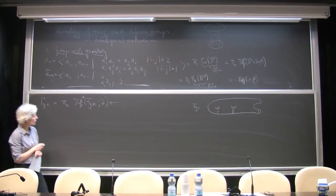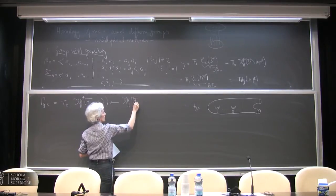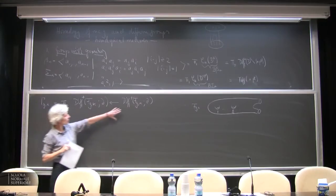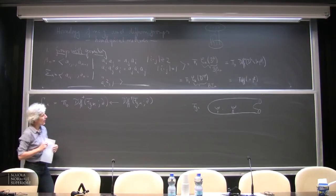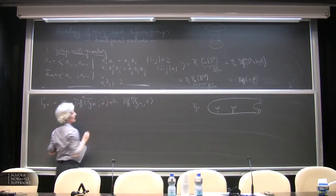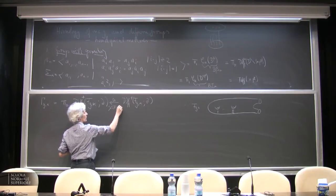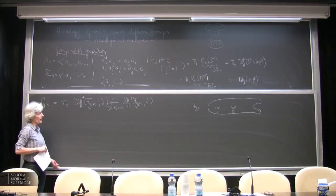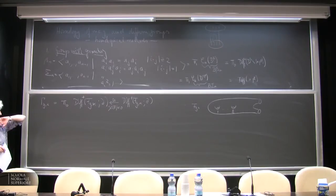The special case in dimension two is that I always have the group of all diffeomorphisms, and the map from the group itself to the connected components is a group homomorphism. The special case here is that this is actually a homotopy equivalence as soon as the Euler characteristic of the surface is less than zero — so as soon as g is two or bigger, these two groups, up to homotopy, have the same information, which is rather special.